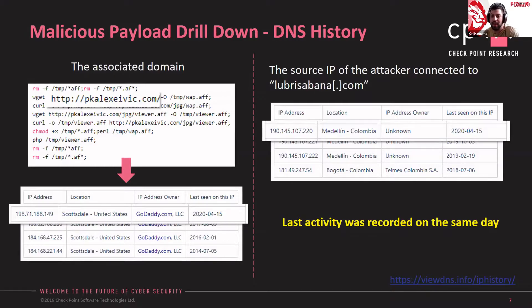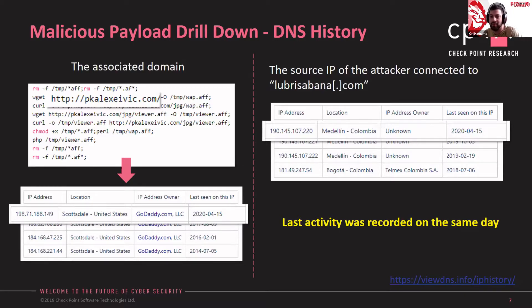We started analyzing the commands to get more clues about the attack type, starting with the PKLXBIC domain. A quick search in DNS info showed us that the last activity on that domain happened around two weeks before our log time. We also searched the history of the attacker source IP and found it related to DNS, with the domain name lubrisbina.com. The last activity on that domain had happened on the same day.